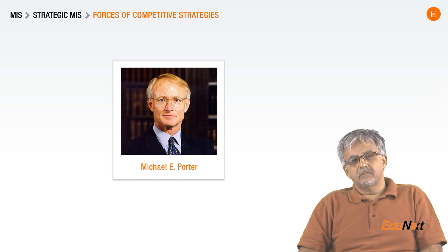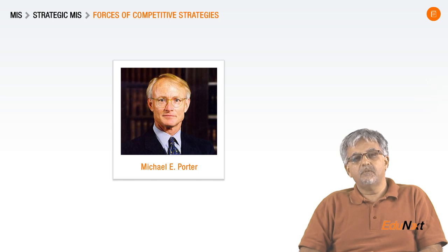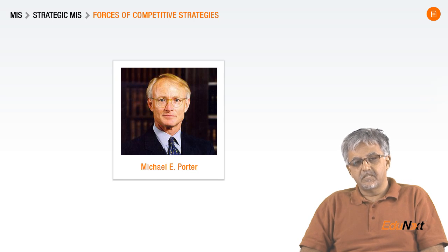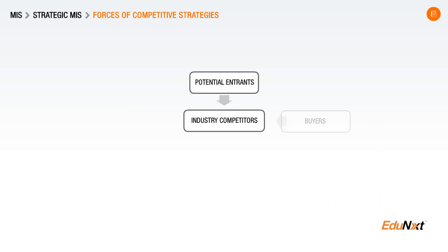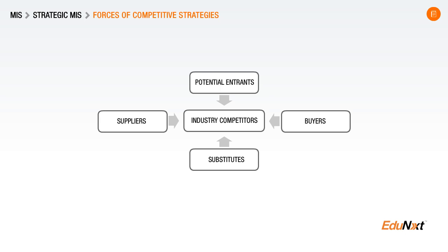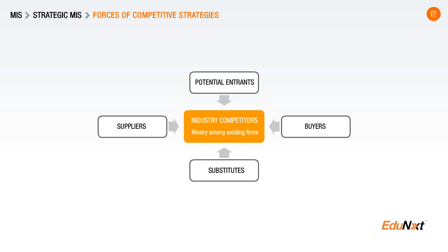Michael Porter has provided an excellent model for understanding how strategy affects competition for an organization. Here is Michael Porter's competitive forces model. The first kind of competition, according to Porter, comes from those who are already in the industry — other organizations that are your competitors, well-identified, who provide similar kinds of products and services.